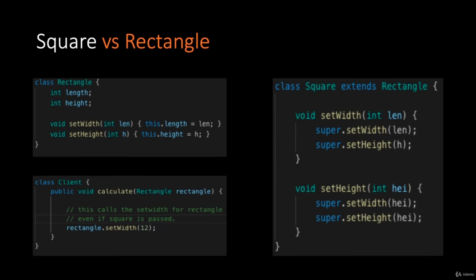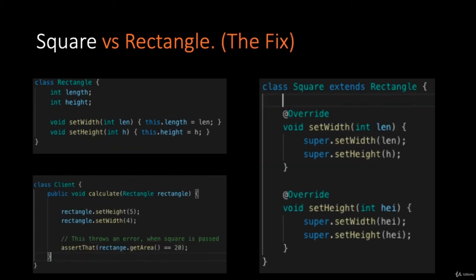Let's look at another example. We have a base class called Rectangle with two methods: setWidth and setHeight. And we have a derived class called Square. The client interacts with the base class and expects it as an argument. When we pass a Square, the method calls setWidth on what it thinks is a Rectangle, updating the width to 12. But now you have a square with uneven sides — that's not correct. You cannot pass a Square in place of a Rectangle, so these two classes violate the Liskov Substitution Principle.